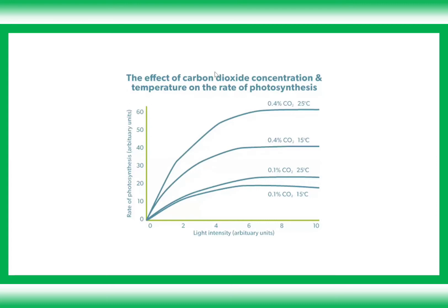The two other factors that can be responsible are carbon dioxide concentration and temperature. When you have 0.1% carbon dioxide in the lower two graphs, the concentration is similar but the temperatures differ — the one with greater temperature shows a slight increase in the rate of photosynthesis. But if you keep temperature constant at 15°C and increase carbon dioxide concentration from 0.1% to 0.4%, there is a huge increase in the rate of photosynthesis, showing that CO2 percentage has a major effect.